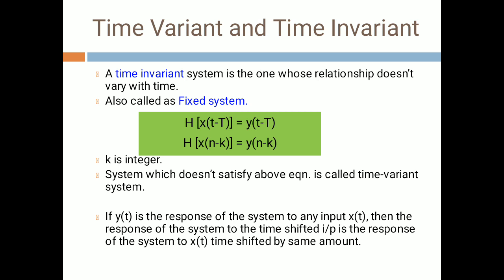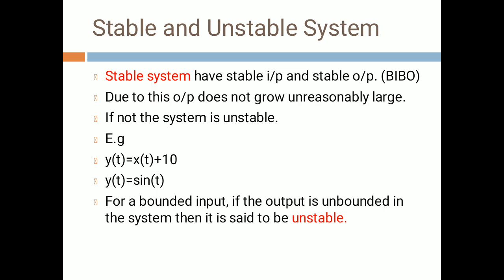The next classification is stable and unstable systems. A stable system has a stable input and stable output, also called Bounded Input Bounded Output, or BIBO. Due to this property, the output does not grow unreasonably large.